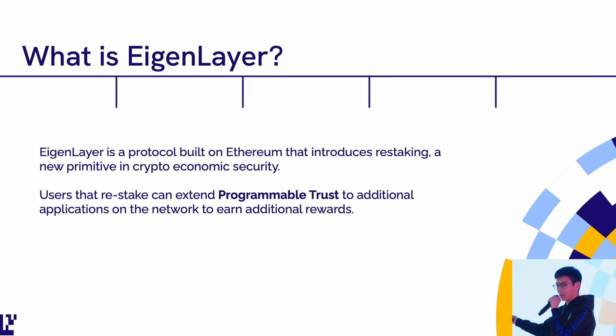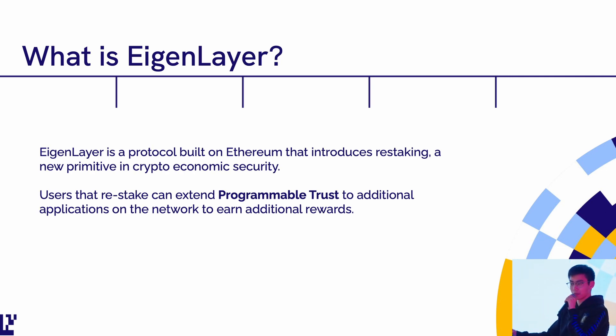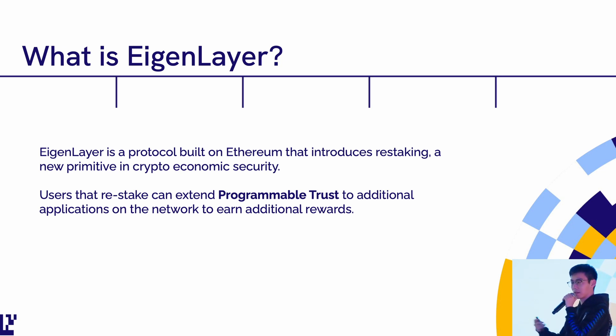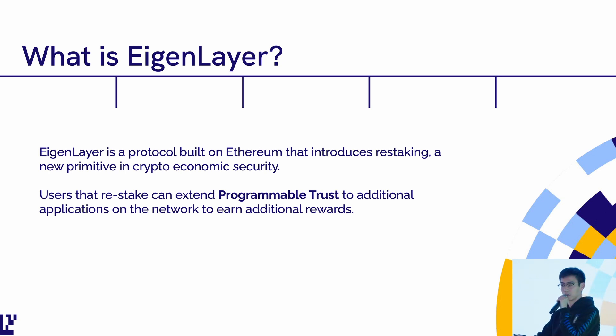What is Eigenlayer? Just quick, setting the stage. Eigenlayer creates a new primitive called restaking that allows you to contribute economic security to new proof-of-stake blockchains.